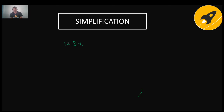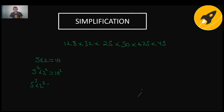Now we learn some simplification tricks. Suppose you need to multiply 128 × 32 × 25 × 50 × 625 × 49. Instead of multiplying each number directly, use the law of exponents. Note that 5 × 2 = 10, and powers of 10 are easy. Express each number as a power of a prime: 128 = 2⁷, 32 = 2⁵, 25 = 5², 50 = 5 × 10, 625 = 5⁴, 49 = 7².